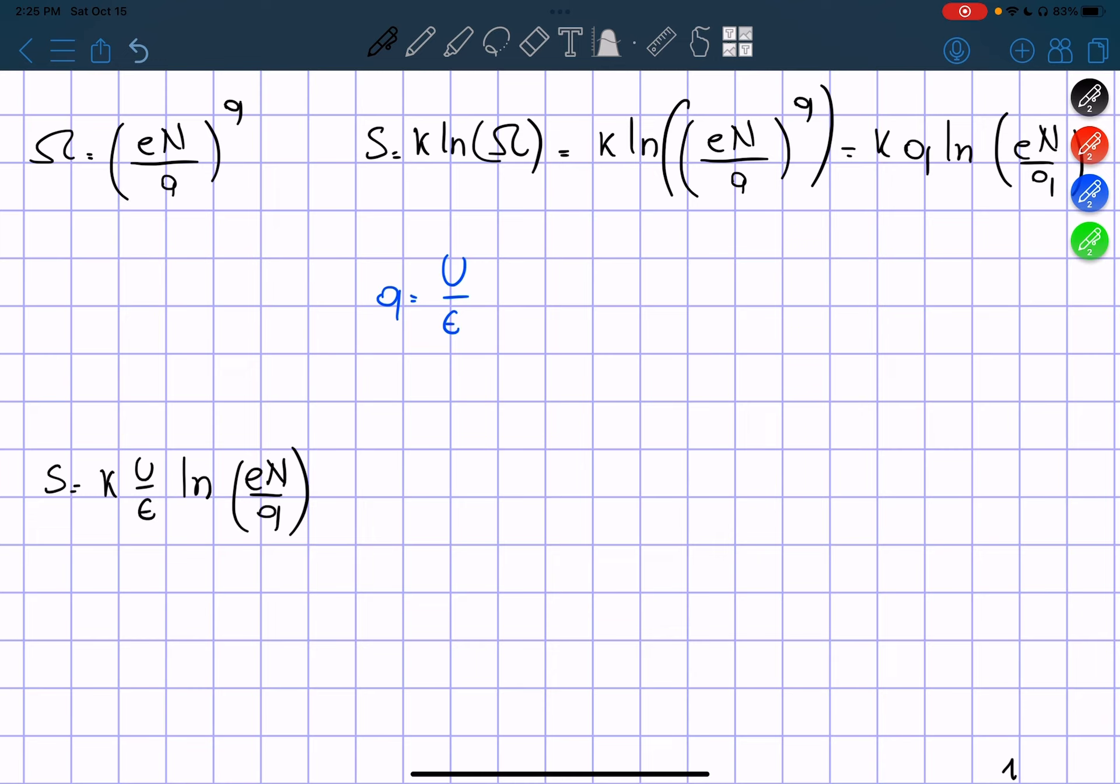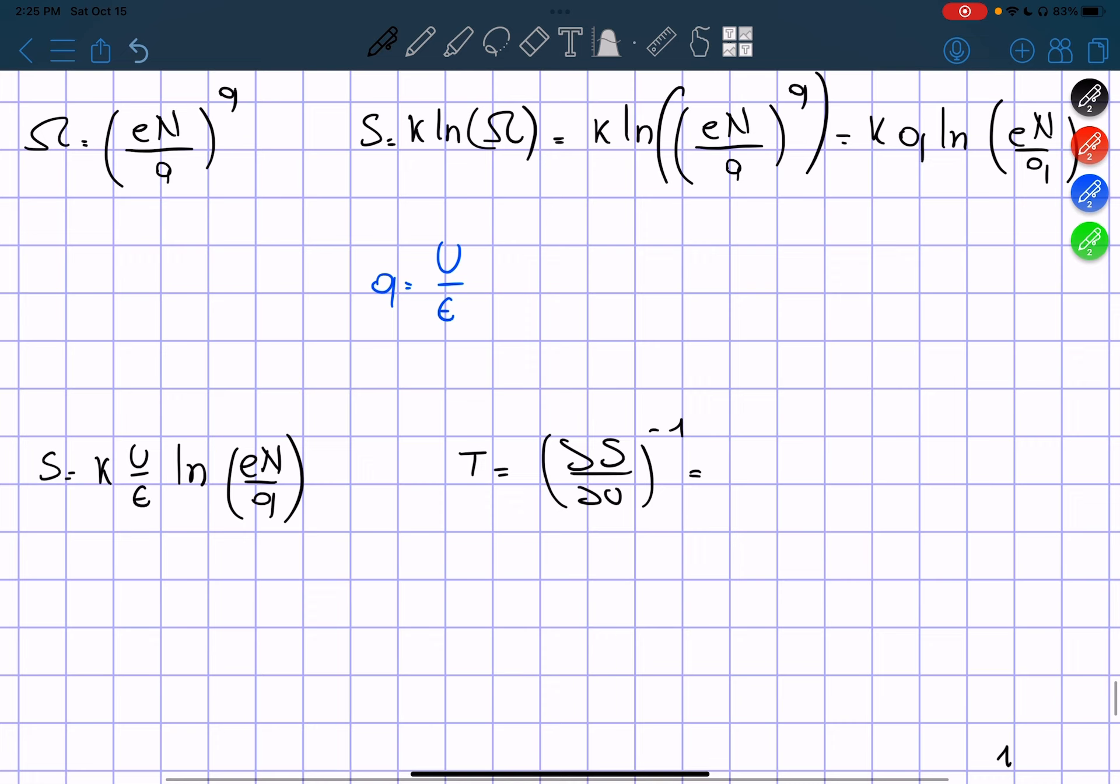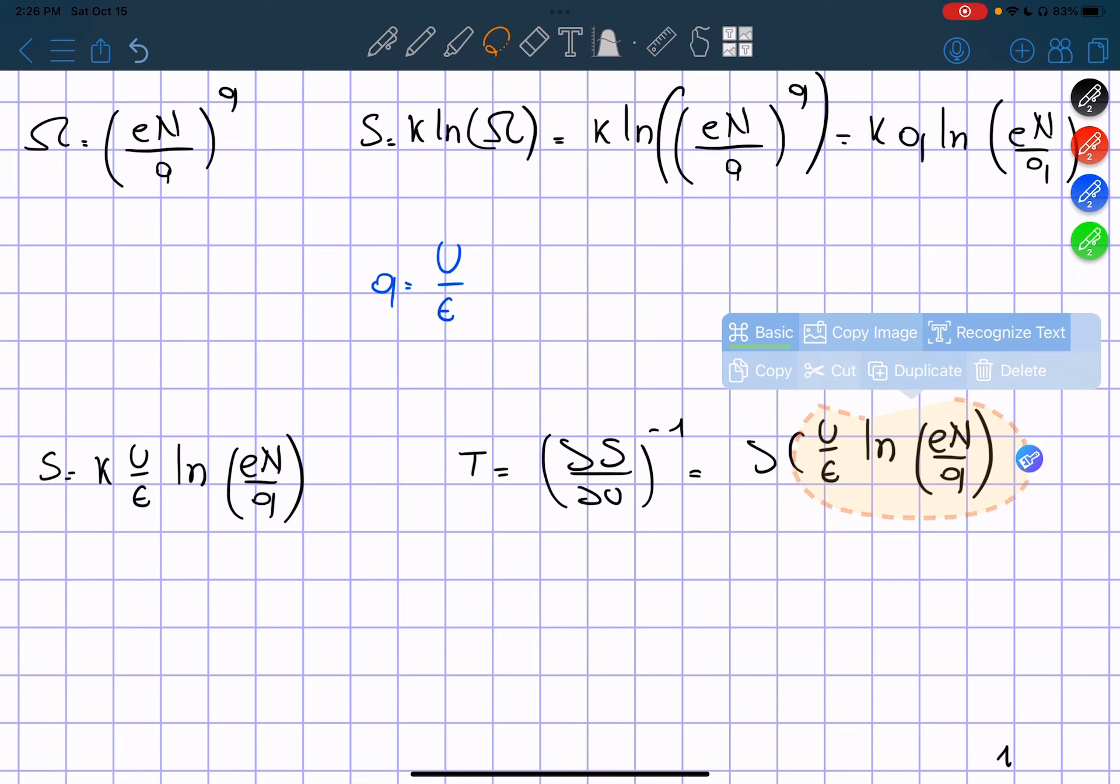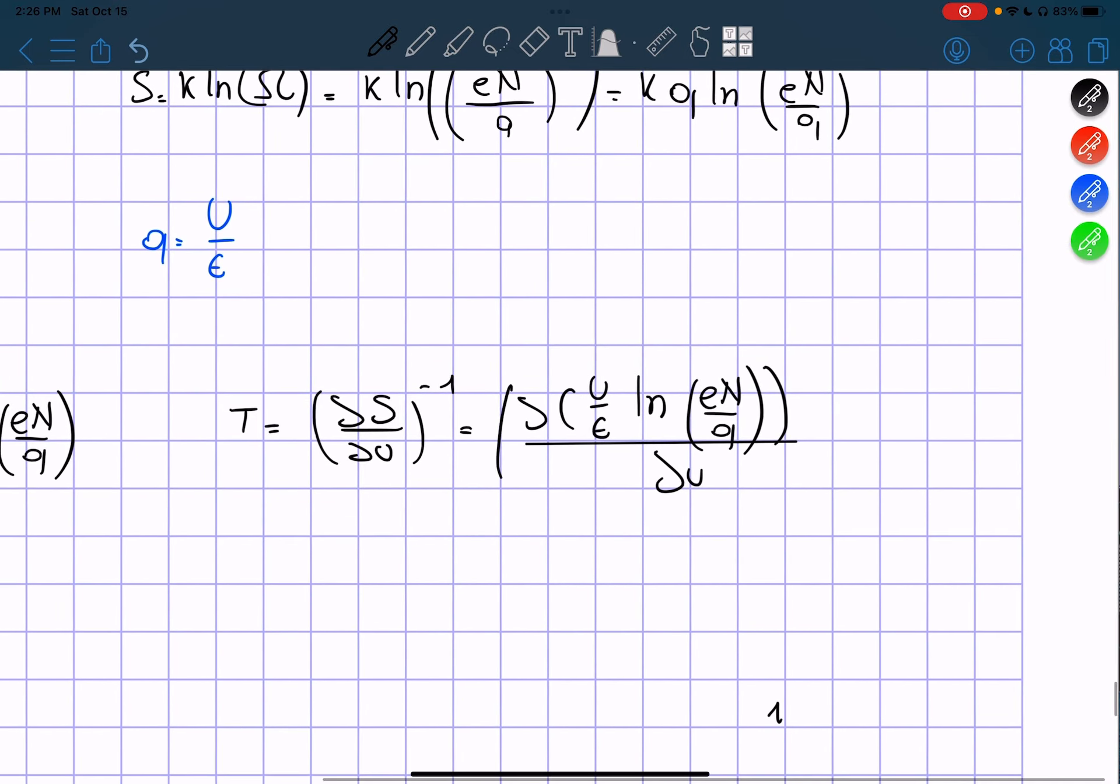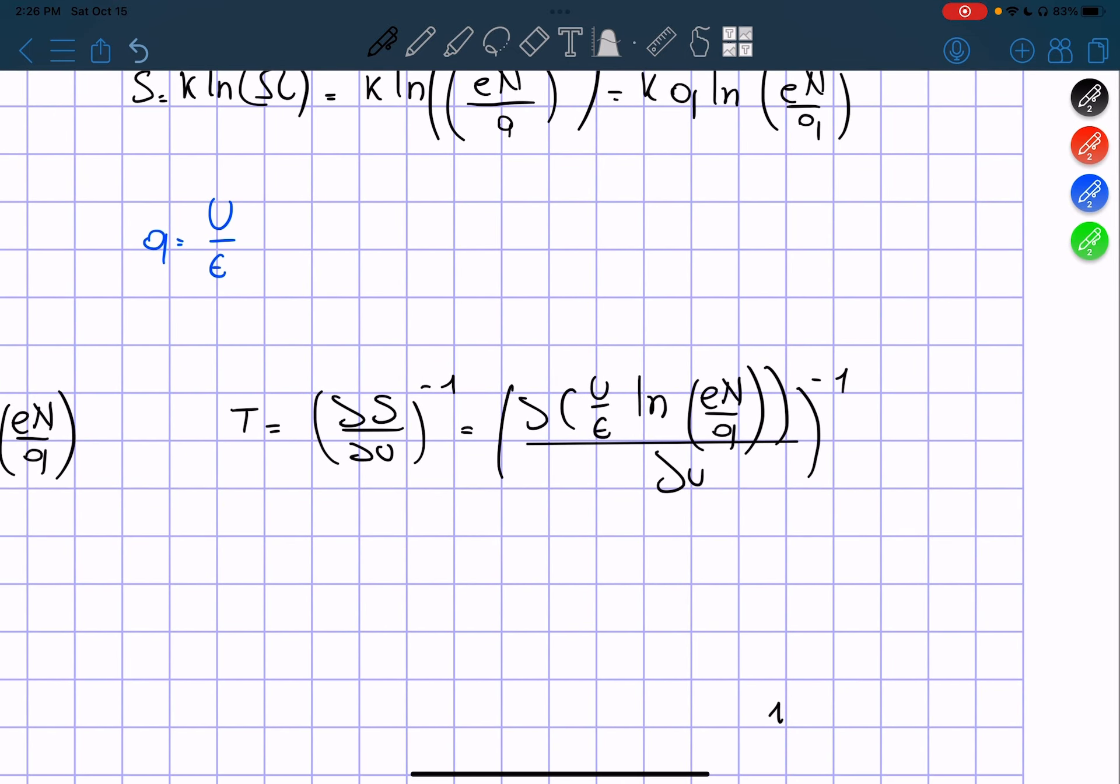Now that we go here, we can say that temperature is equal to the entropy differentiated in terms of energy power of negative 1. So we're going to get the differentiation of this in terms of the energy power of negative 1.